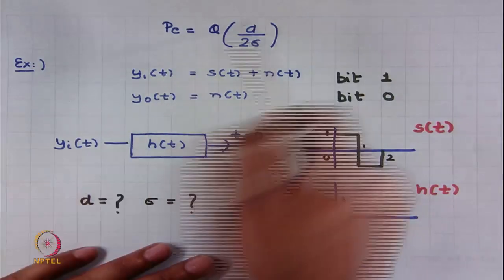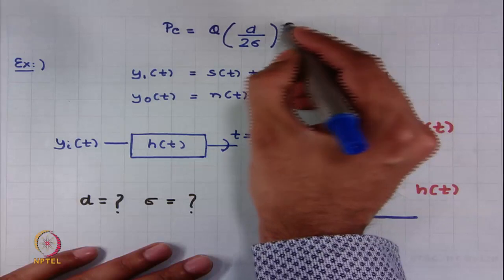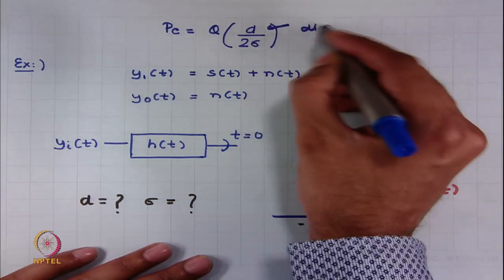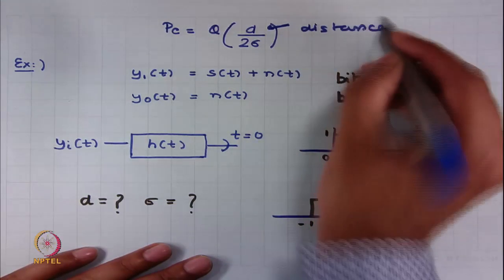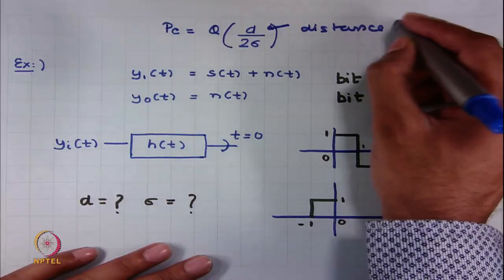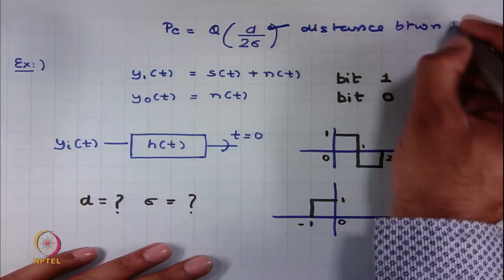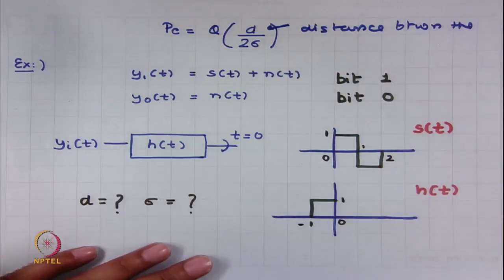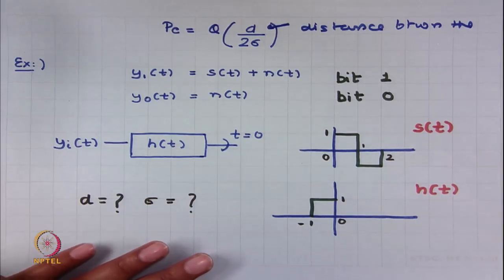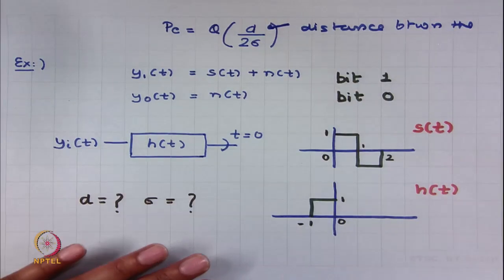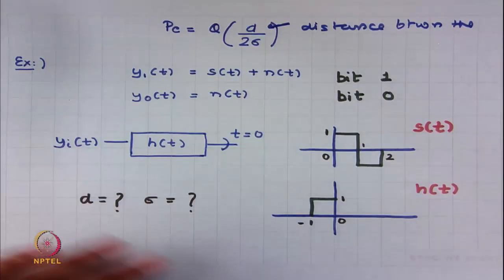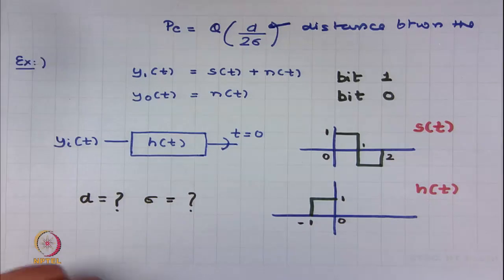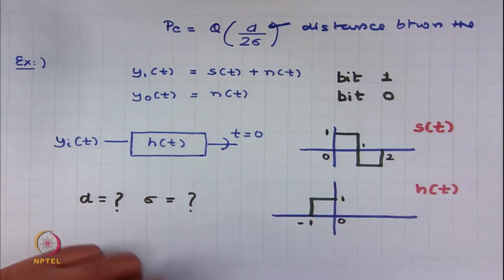In general, we can say that the probability of error is Q(d / 2σ), where d denotes the distance between the received signals and σ is the standard deviation of the noise. Let us now try to understand d and σ in more depth through a couple of examples.